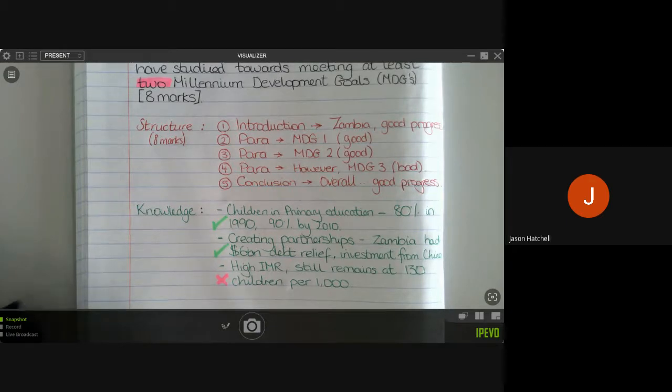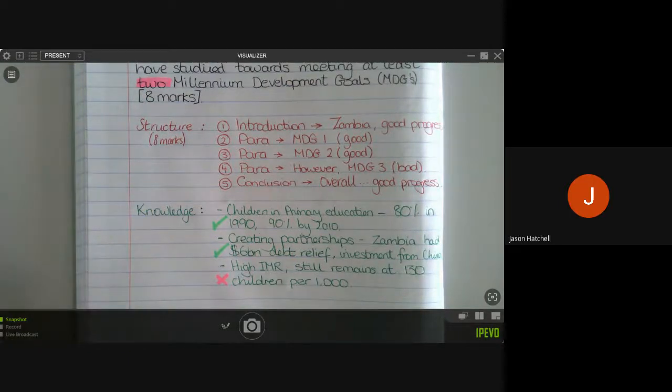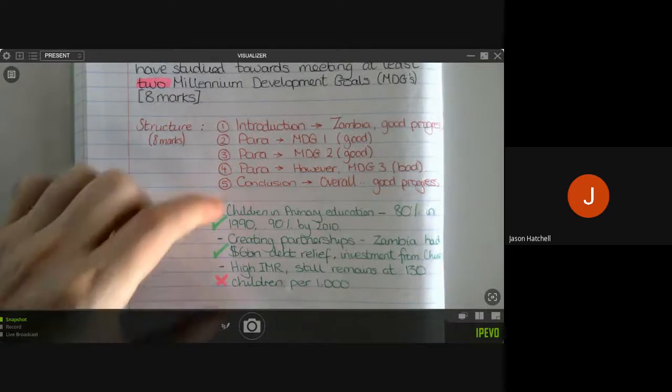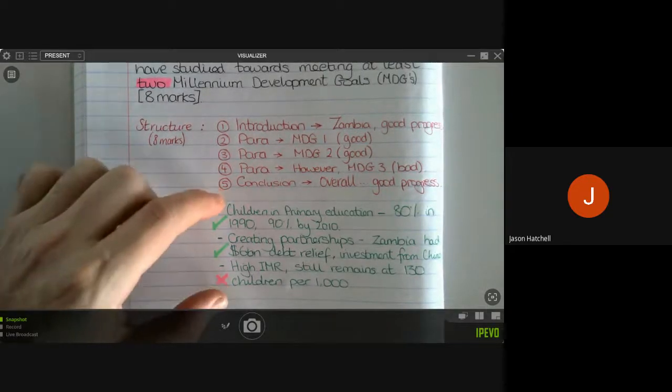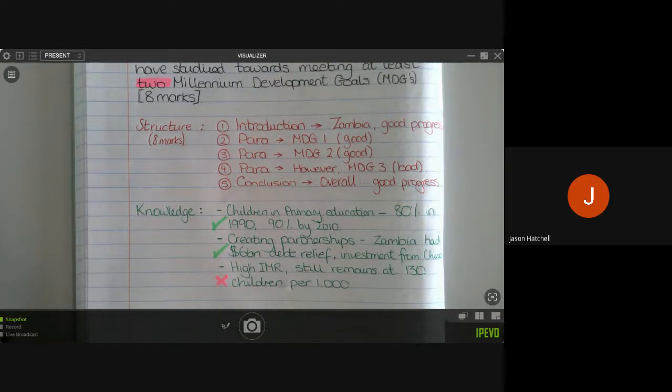So I've got my structure. I've got the key knowledge I will need. And now, in essence, it's all about how I use this knowledge. So that is all I really need to know—what I need to be able to explain it really well. And as you know, in geography, the best way to structure your paragraphs is by using PEEL paragraphs.